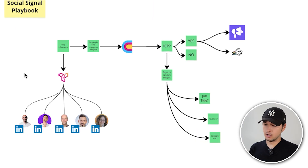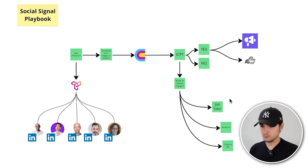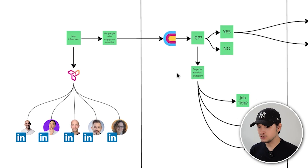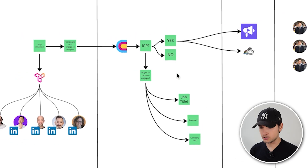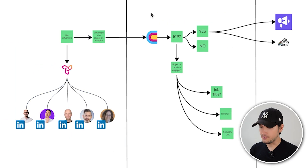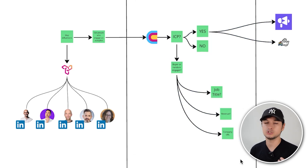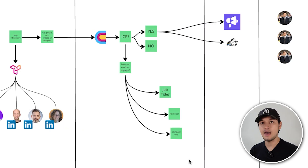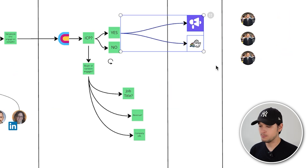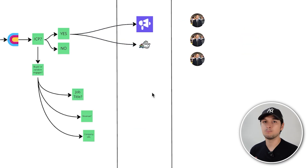Our automated outreach mechanism, which I call the Social Signal Playbook — part of the go-to-market playbooks I implement in the fastest-growing companies in the world — can be divided into four major parts: getting social signals, the revenue operations part where we separate fake signals or non-ICP signals from real ones, an automated messaging part, and finally when a prospect replies, we move the conversation to sales people.